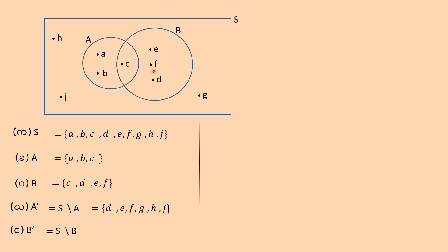So the first one is A, B, A, A, B, A, G, A, G. So the third one is A, B, G, S, G.